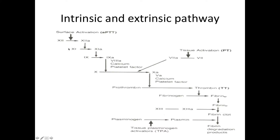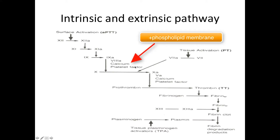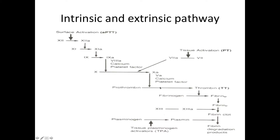After factor 12 is activated, it goes through a cascade: activation of factor 11, then factor 9, and from 9 to 10 with the help of factor 8, calcium, platelet factors, and phospholipid membrane. Then, through factor 5, calcium, platelet factor, and phospholipid, activated factor 10 converts prothrombin into thrombin, which in turn cleaves fibrinogen into fibrin. These are the clotting cascade numbers you need to memorize.